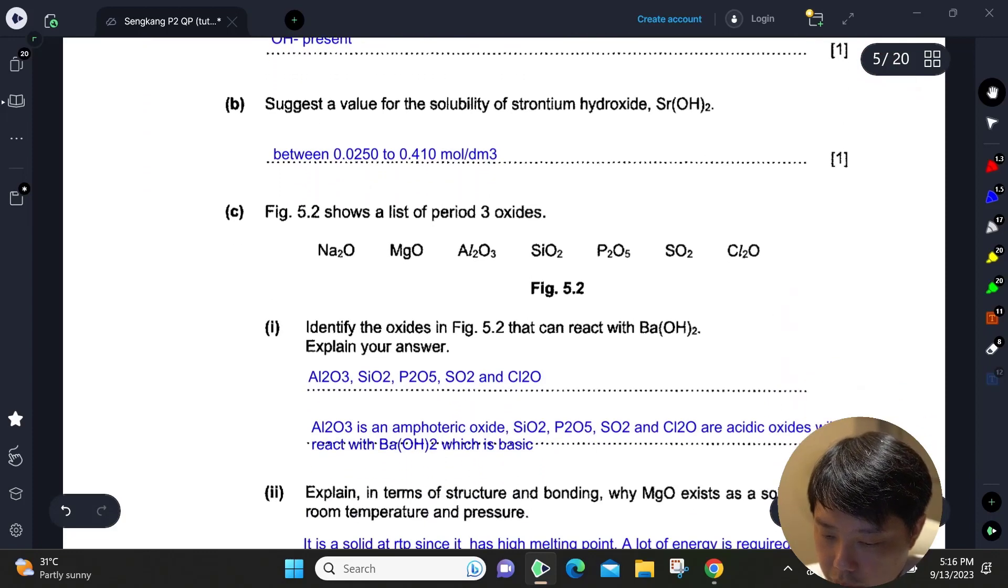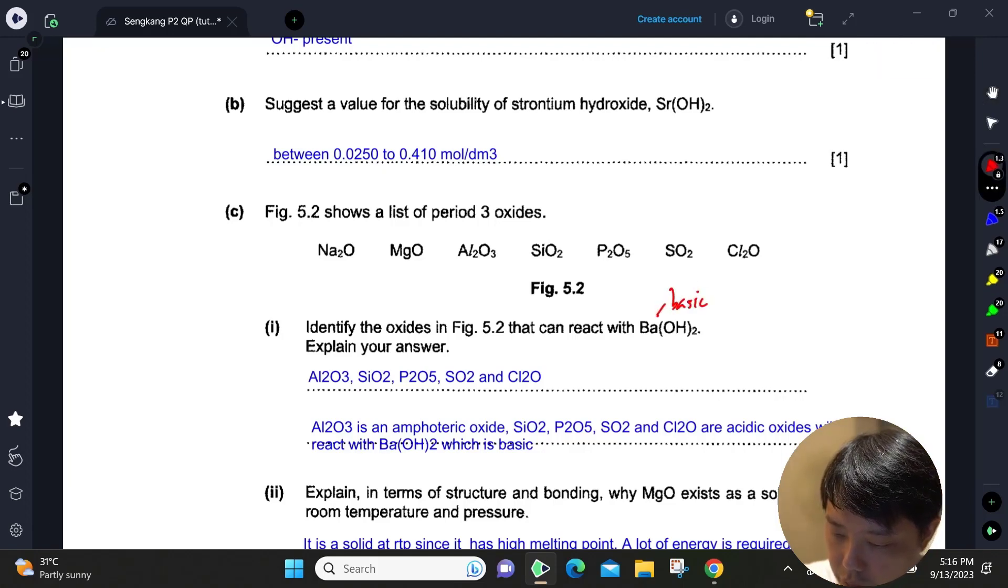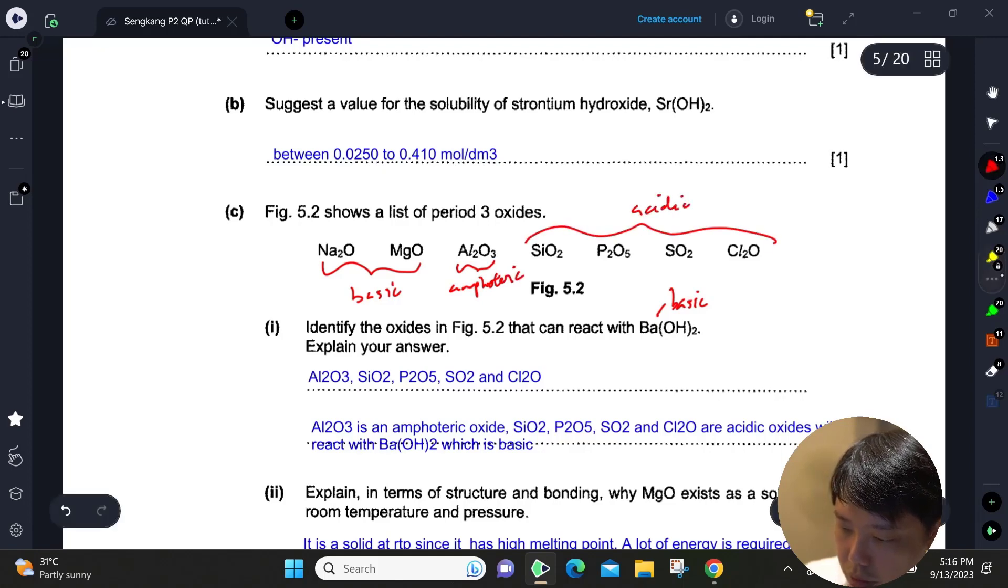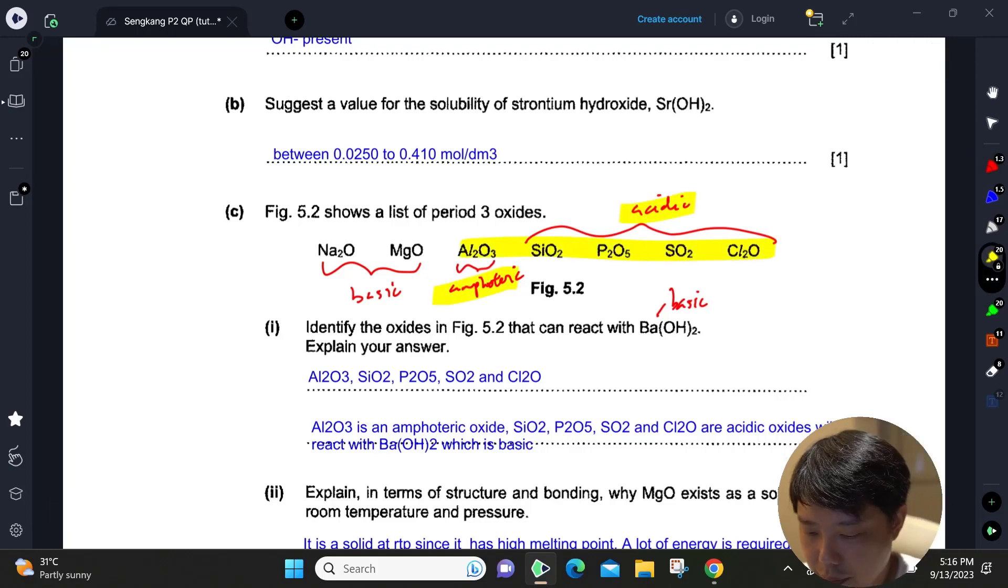Part c: identify the oxides in Figure 5.2 that can react with barium hydroxide. Barium hydroxide is a base, obviously. From the whole list, these two are going to be basic, and this is your amphoteric, and the last four are acidic. So all of these, including amphoteric and acidic, all of them will react in an acid-base reaction with barium hydroxide.